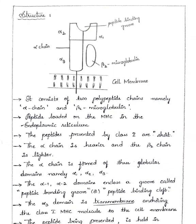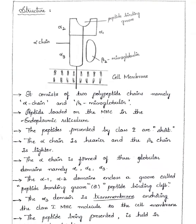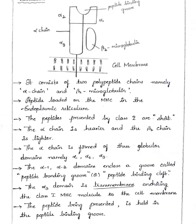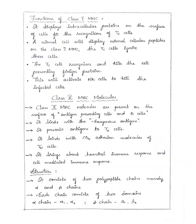The alpha-3 domain is transmembrane, anchoring the Class 1 MHC molecule to the cell membrane. The peptide being presented is held in the peptide binding groove. Coming to the functions of Class 1 MHC molecules: it displays intracellular proteins on the surface of cells for recognition by TC cells. A normal cell will display normal cellular peptides on its Class 1 MHC, and TC cells ignore these cells.